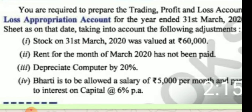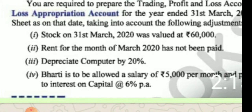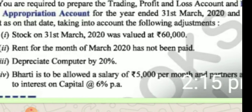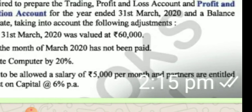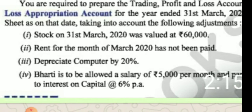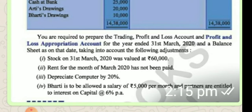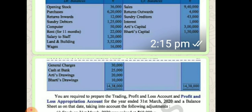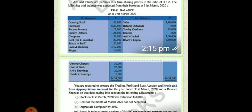Some adjustment information is given. Stock on 31st March — that is closing stock. Rent for the month of March — one month rent is outstanding. Depreciation on computer by 20%. Bharti is allowed a salary of ₹5,000 per month. Partners are allowed interest on capital at 6% per annum. This is the first illustration in DK Goyal's book — you can refer to it there.